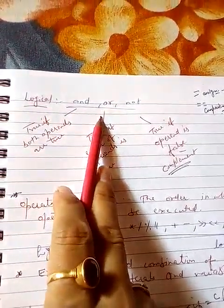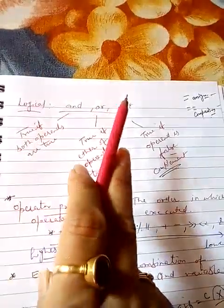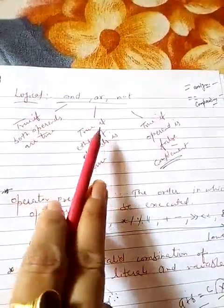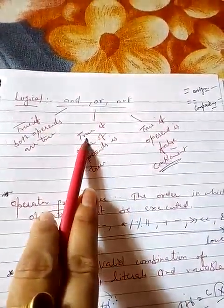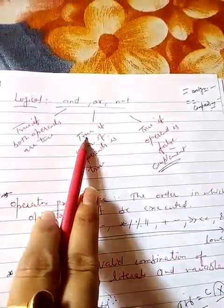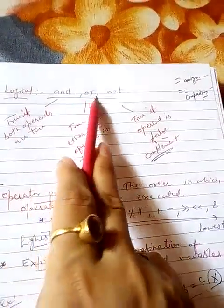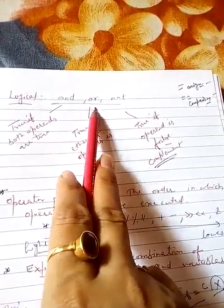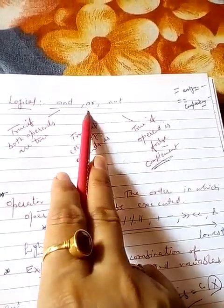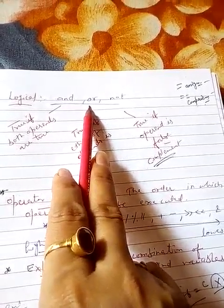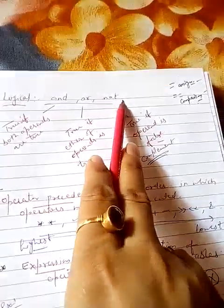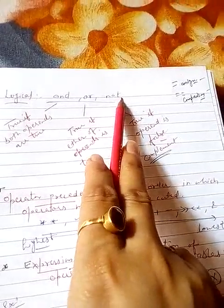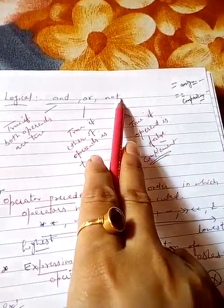If one of the conditions you have passed here if anyone is true then the answer will be true. Only in one case it would be false when all the conditions or the operands you are passing here all these are false. Then only this result will be false. Not is just a complement. Not operator is applied for the complement of any operand.